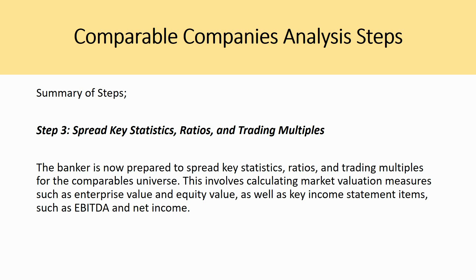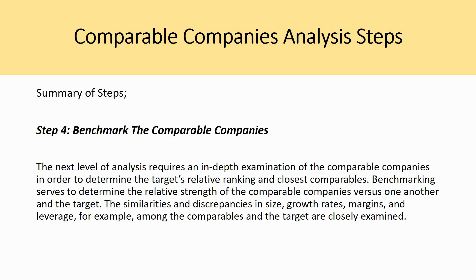In step three, the banker spreads key statistics, ratios, and trading multiples for the comparable universe. This involves calculating market valuation measures such as enterprise value and equity value, as well as key income statement items such as EBITDA and net income. We'll spend a lot of time on step three to really understand each of these metrics so that when you are in an interview or speaking to someone, you not only regurgitate the information but truly understand it.